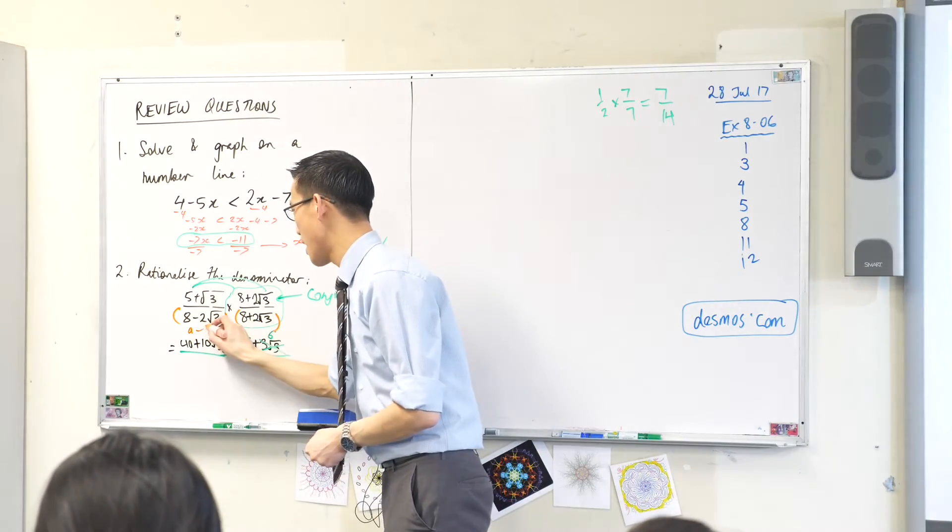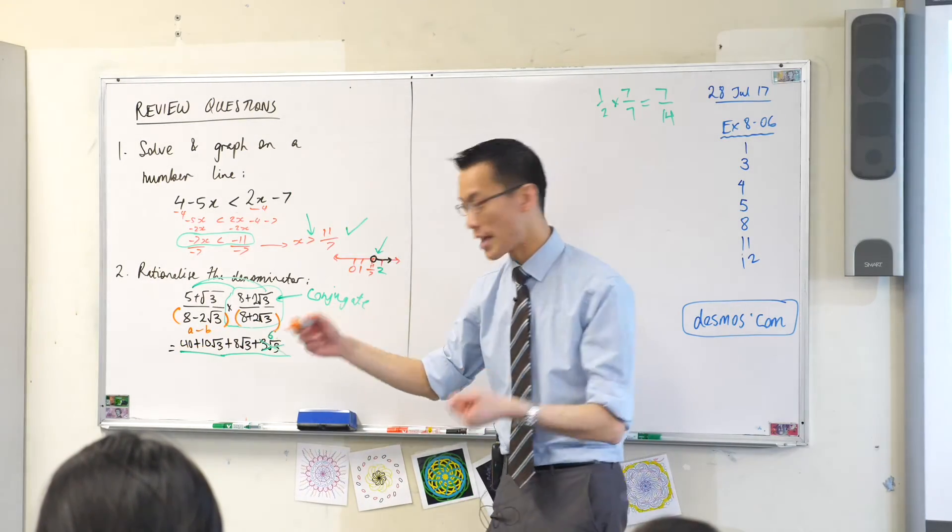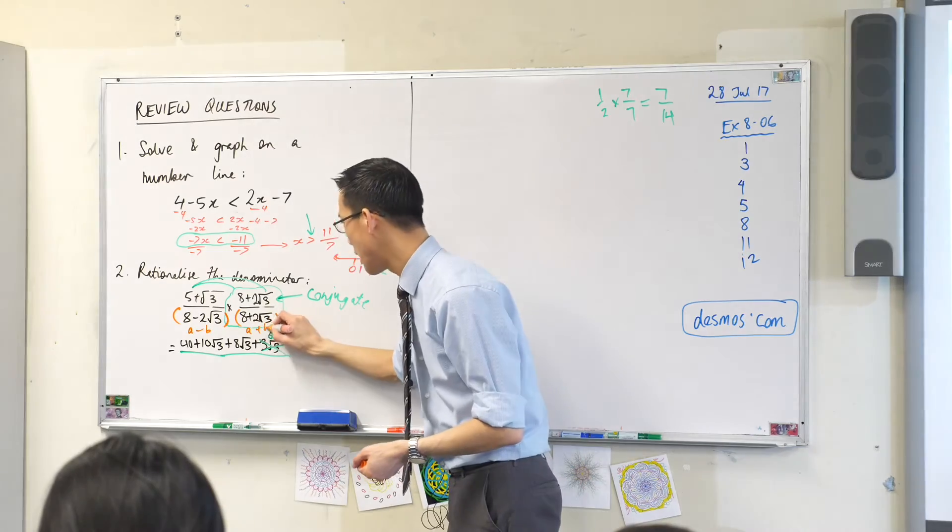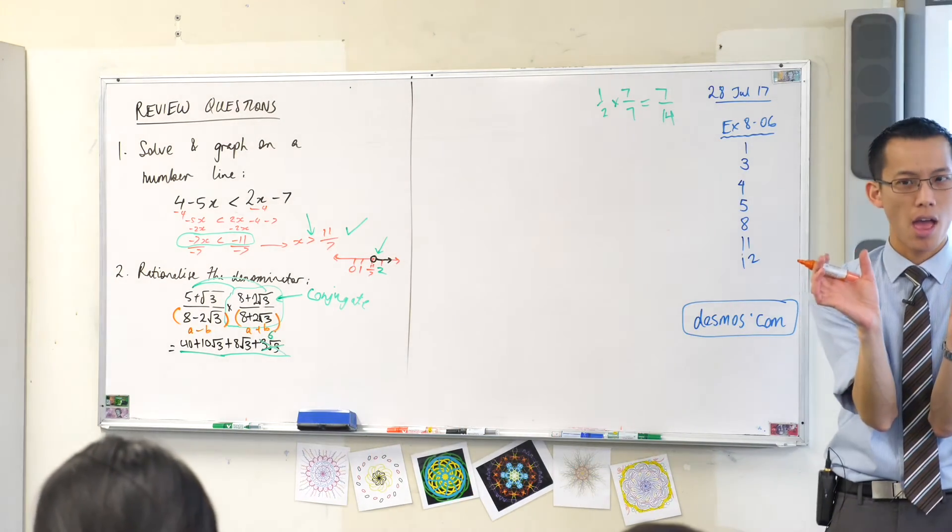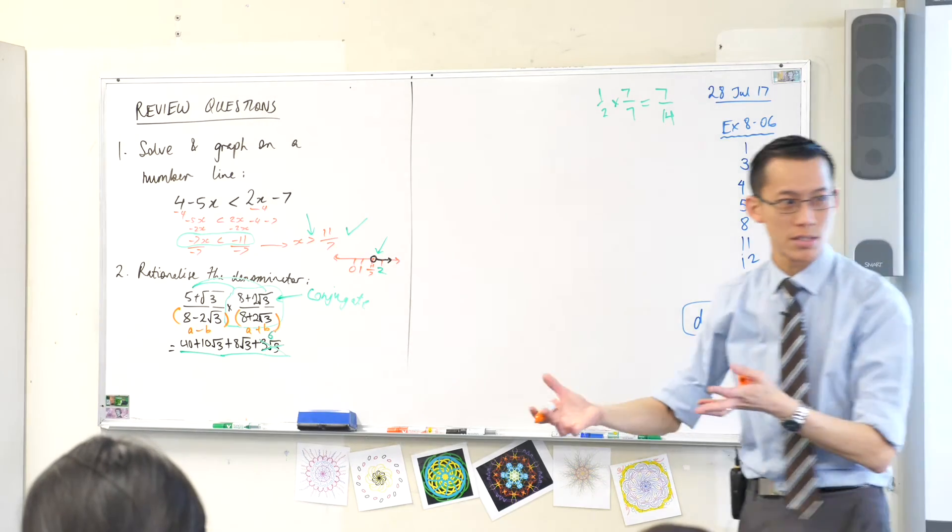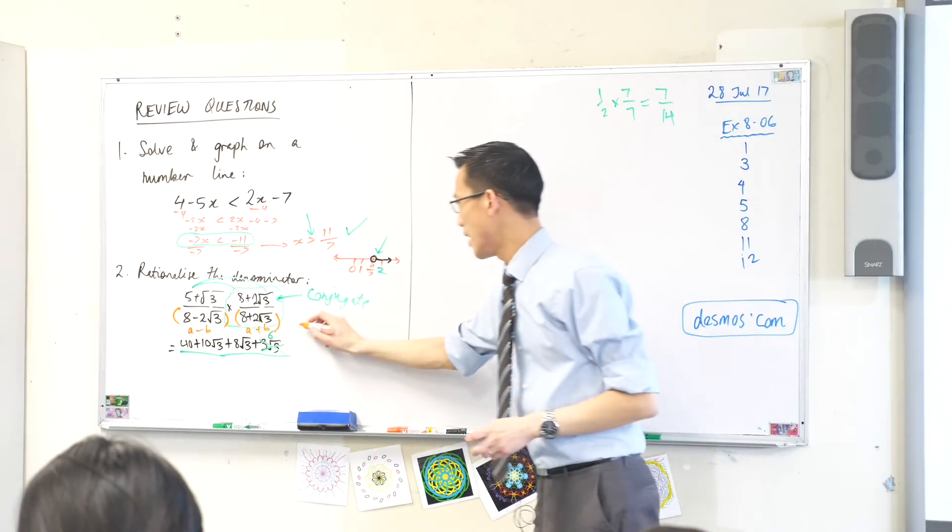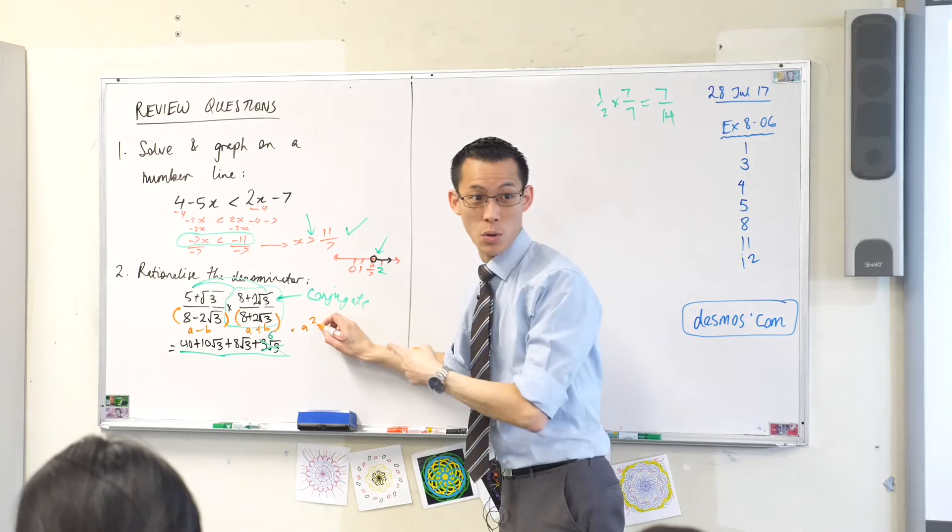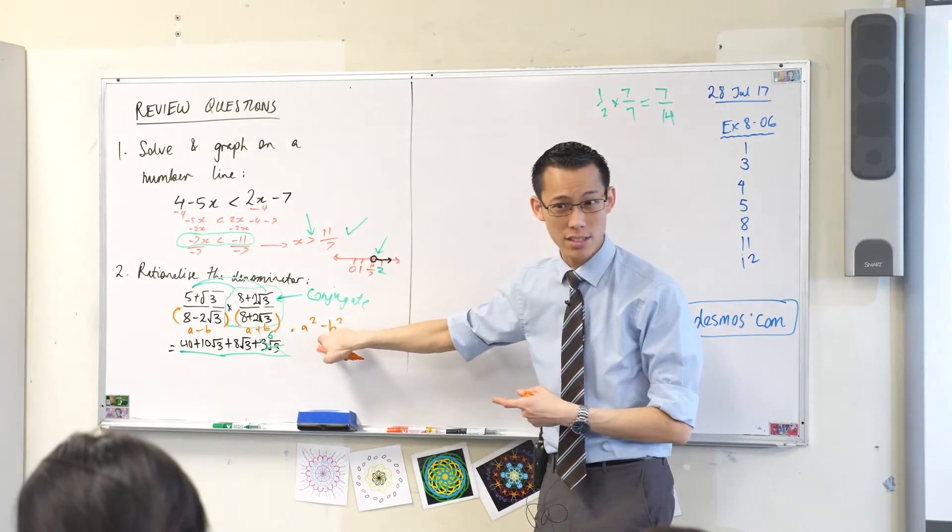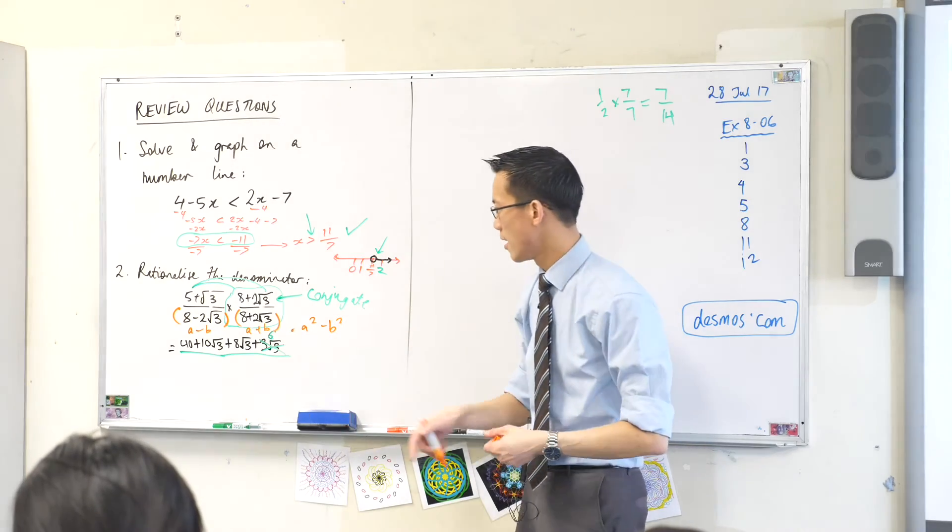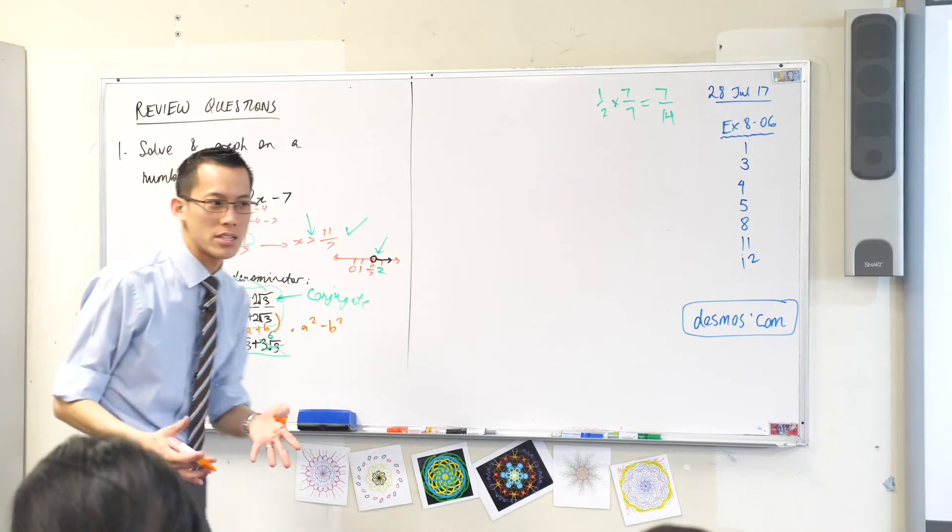This is a minus b times a plus b. And that's... What does that equal when you multiply this together? It's called difference of squares. So what is difference of squares? It's a squared... There's a square... Minus b squared. It's the difference between two squares.